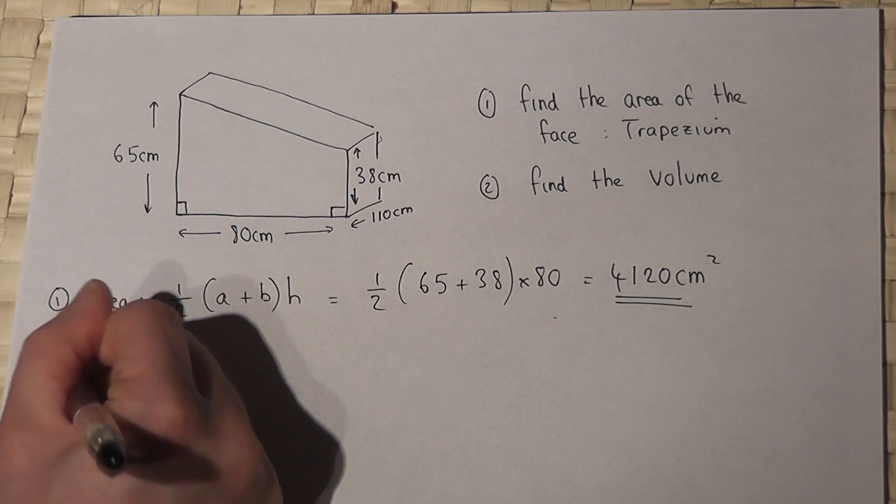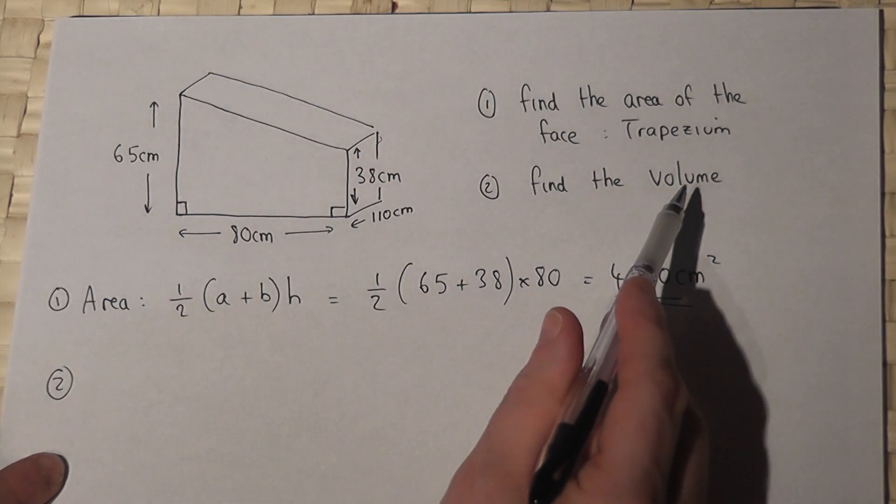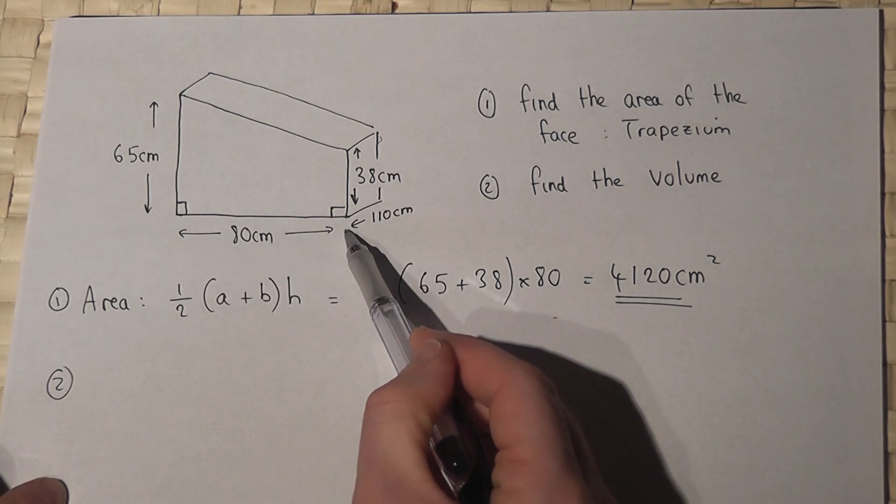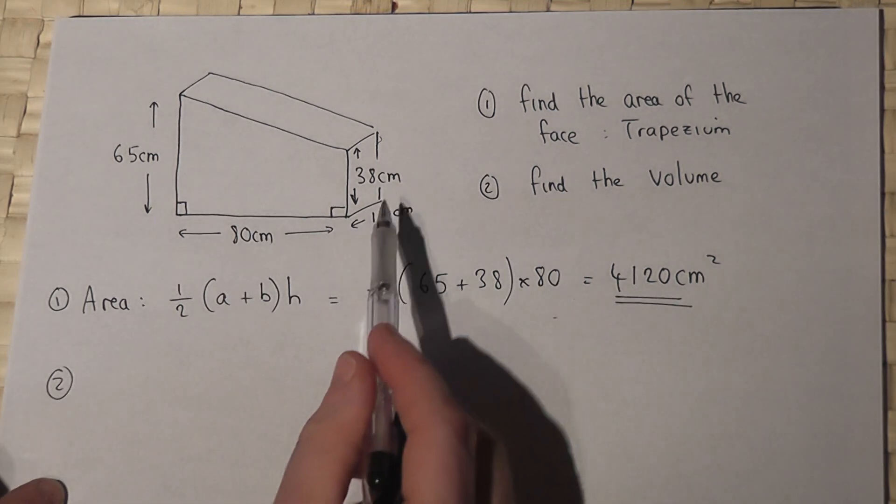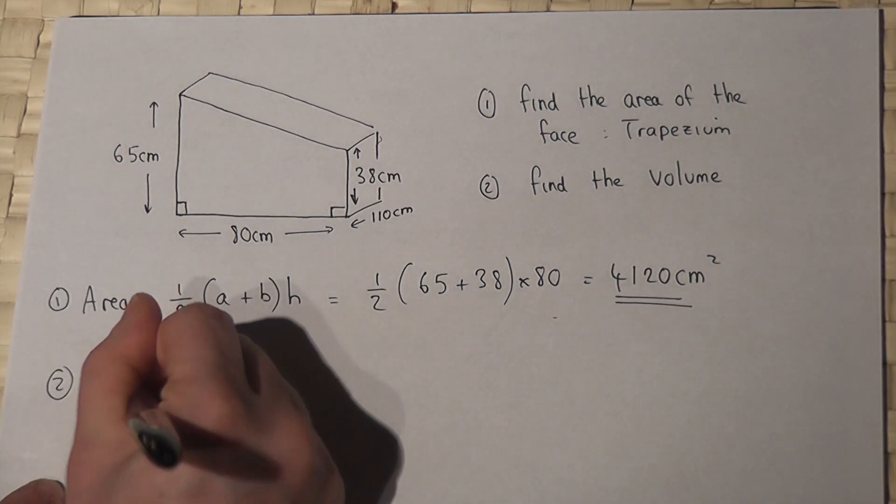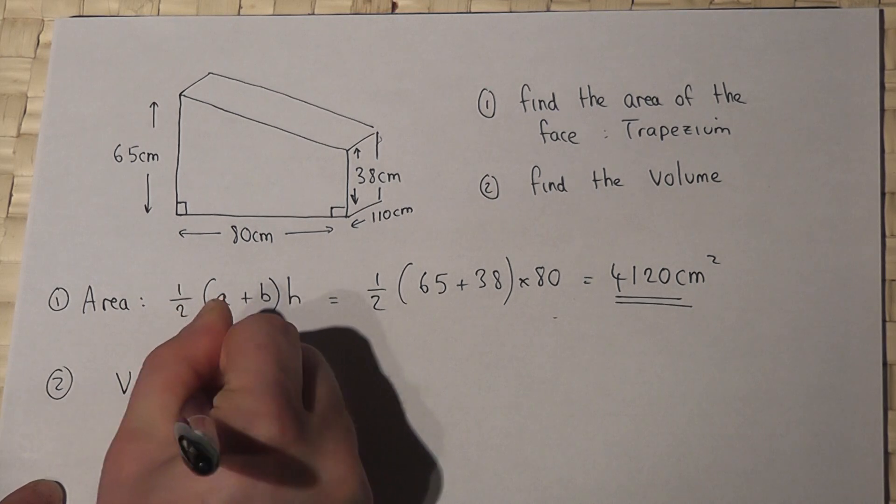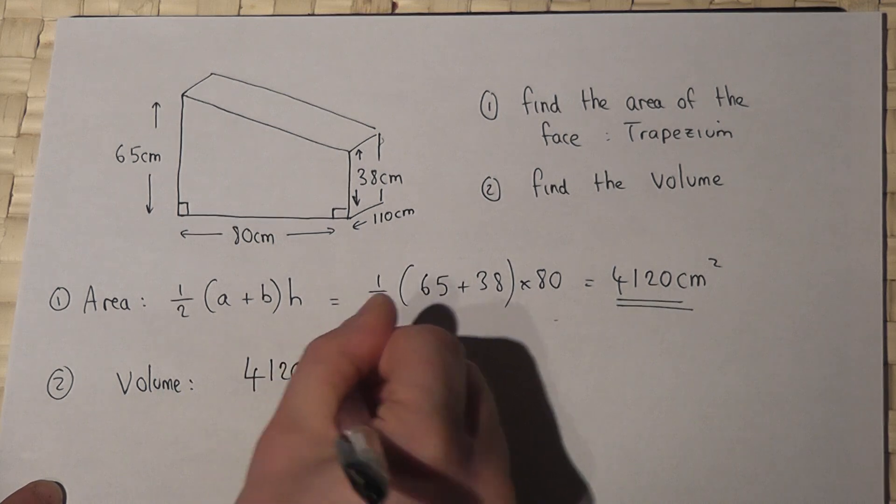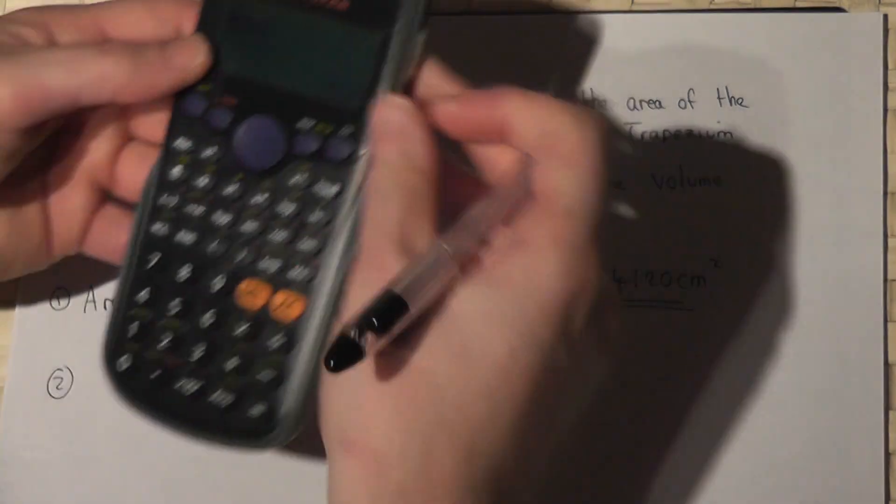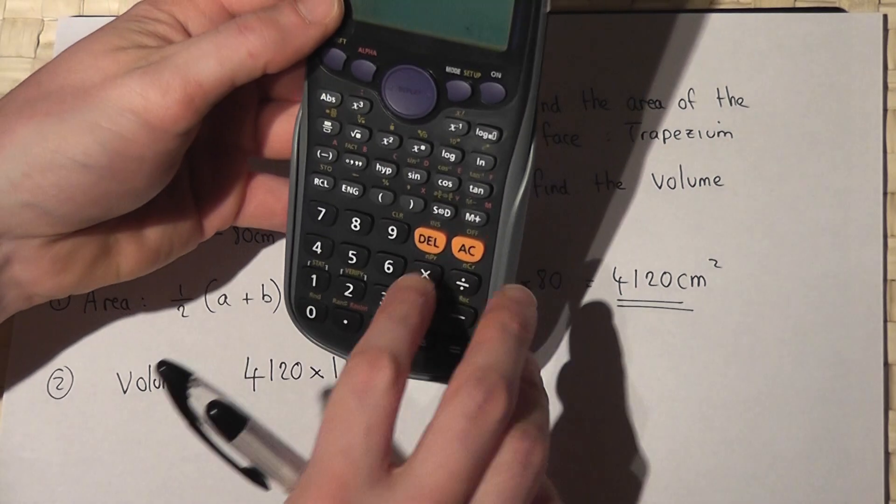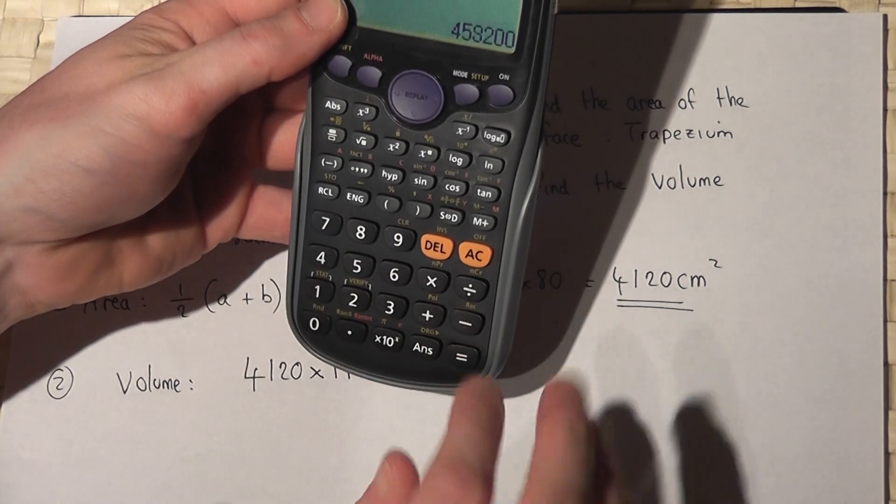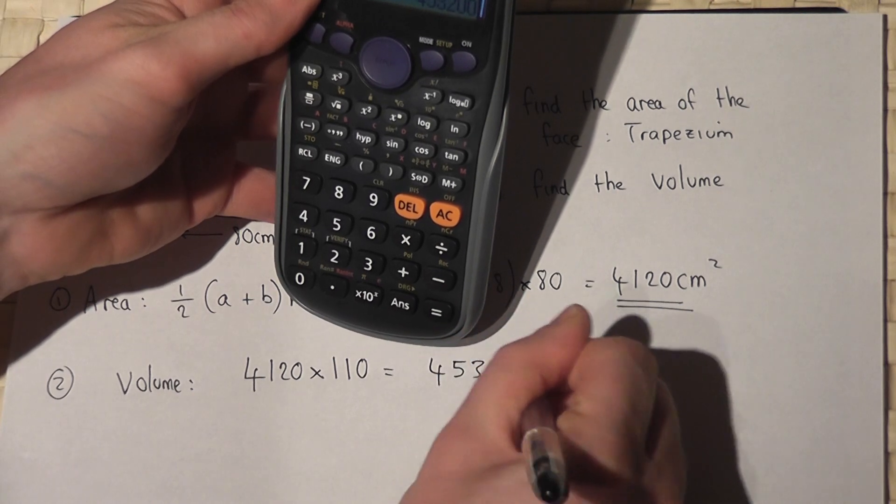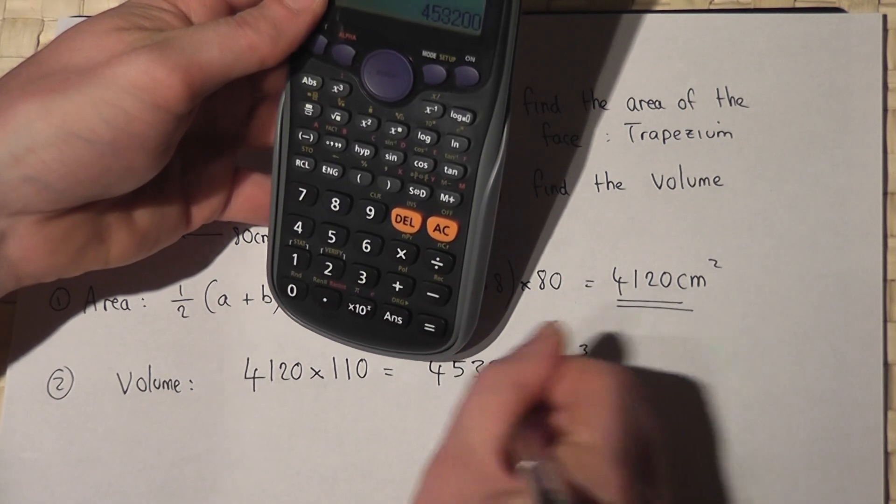Now, in part 2, we're just asked for the volume. The volume is just the area of the face times by the depth, which is 110 centimeters. So the volume will just equal 4120 times by 110. So 4120 times 110 works out at 453200 centimeters cubed.